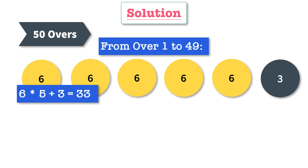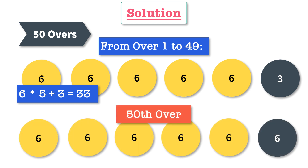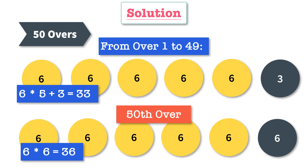The most important point to remember is that this strategy has to continue till the 49th over and not in the 50th over. In the last over, he can hit a six on the last ball as well, because that will be the last ball of the match. Thus, runs for the last over will be six times six, that is 36.